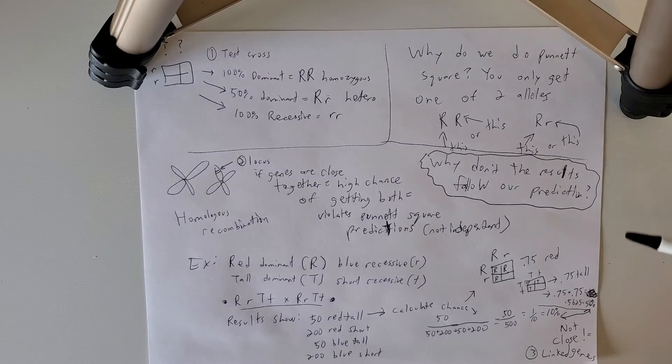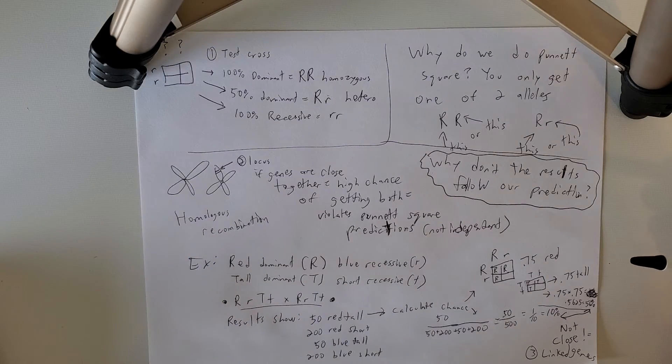In this video, we're going to talk about how come when we do the Punnett square, sometimes we might not be able to get the results that follow our prediction.